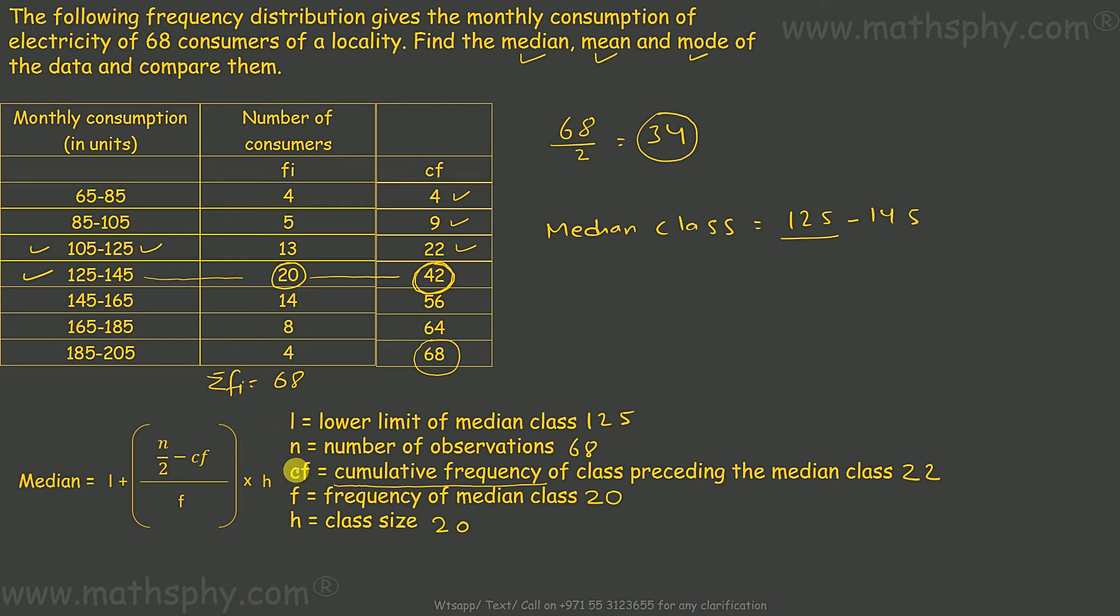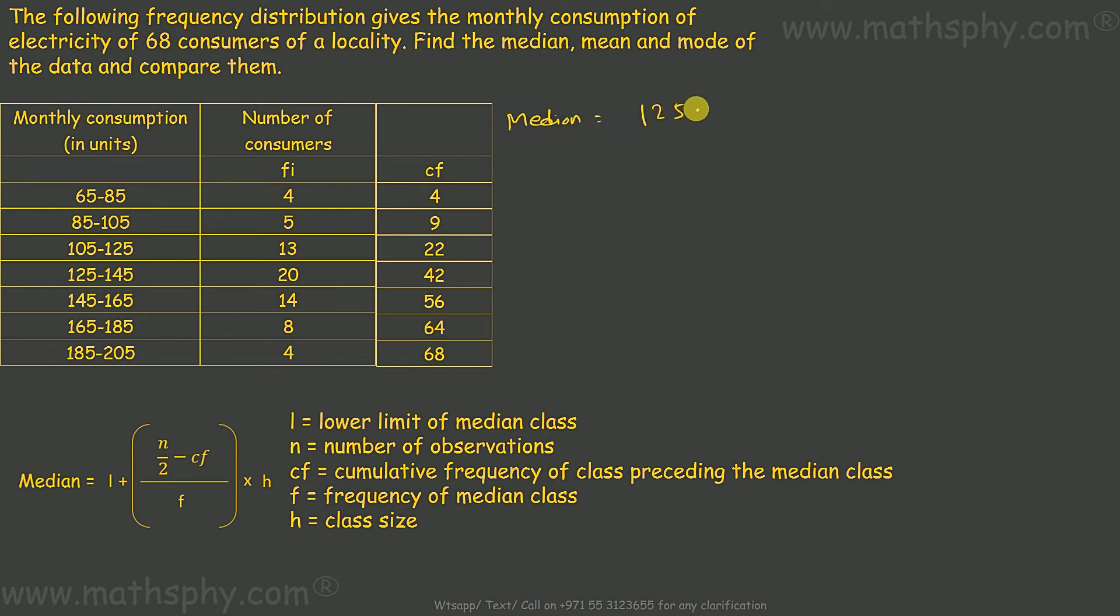L, N, C, F and H. It's plug and play. Put all these inputs here and get the median. Let's find out what the median is by putting these inputs in here. Lower limit is 125. So median would be 125 plus 68 over 2 is 34, minus CF which is 22, over frequency of median class which is 20, into H which is 20.